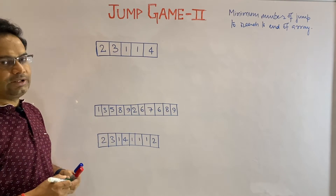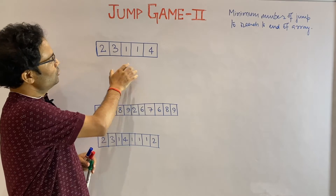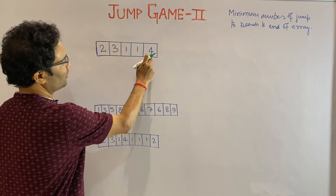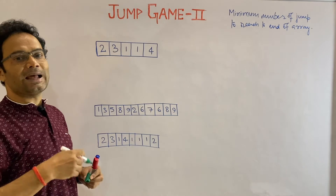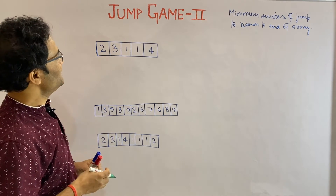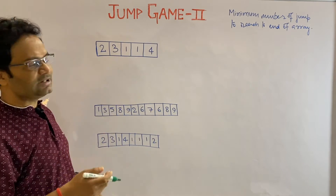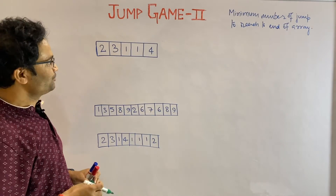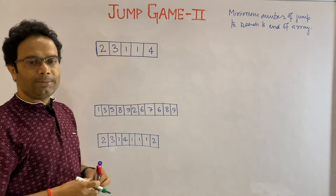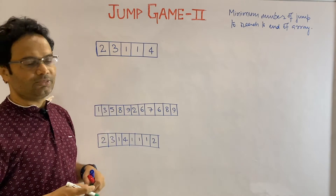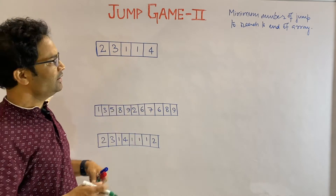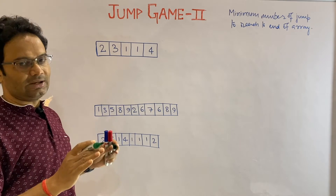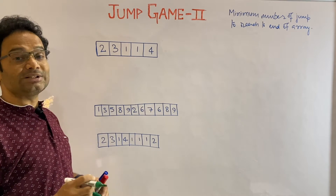In this video we are going to see, given one array, what is the minimum number of steps by which you can reach the end of the array if you start from the beginning. Each number represents the maximum number of steps you can take. You have already seen this kind of problem in my previous video - Jump Game - so I recommend visiting that for better understanding. In Jump Game we had to find out whether we could reach the end or not, but in Jump Game II you have to find out the minimum number of jumps to reach the end.